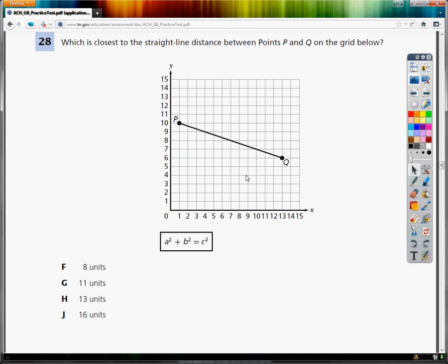They have that black box there that says A squared plus B squared equals C squared. If they give you the formula, it's probably what you're going to use. So I'm going to write down A squared plus B squared equals C squared.